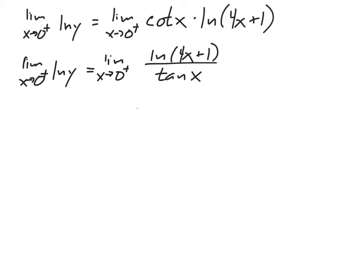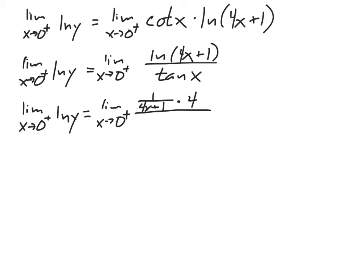Having done that, we can go ahead and apply L'Hôpital's rule — everything else just carries down. With L'Hôpital's rule, I find the derivative of the top, which is the natural log of 4x plus 1. That gives me 1 over 4x plus 1 times the derivative of the inside, which is 4 — that's just chain rule on top. And on the bottom, the derivative of tangent is secant squared of x.